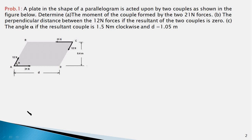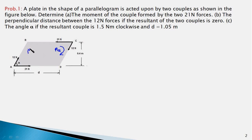In this problem there is a plate in the shape of a parallelogram acted upon by two couples. One couple is formed by two 21-newton forces which are parallel, oppositely directed, with a distance of 0.4 meters between them. The other couple is formed by 12-newton forces. The couple m12 is in clockwise direction, and the couple m21 formed by the 21-newton forces is in anti-clockwise direction.